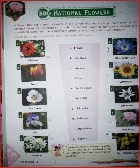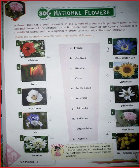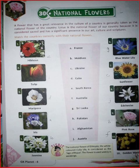What is the national flower of Ukraine? Sunflower is the national flower of Ukraine. Edelweiss is the national flower of Austria. Pink rose is the national flower of Maldives. The national flower of Maldives is pink rose. Golden wattle is the national flower of Australia.